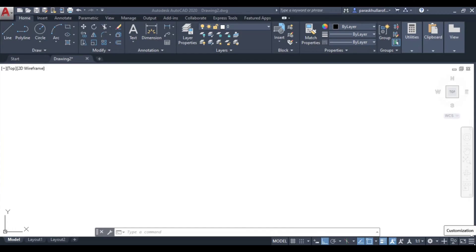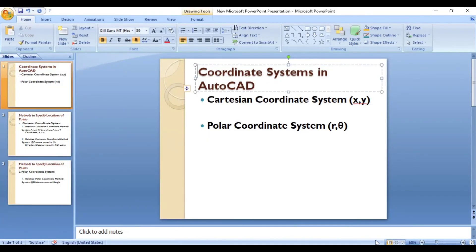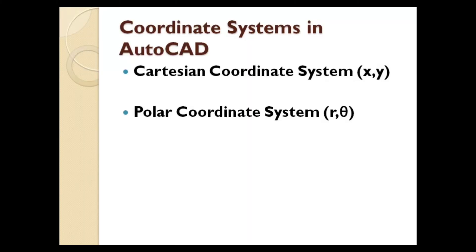Hello students. Today we will discuss the coordinate systems in AutoCAD. Basically, there are two coordinate systems: one is the Cartesian coordinate system, which has x and y as the coordinates, and the second is the polar coordinate system, which is in the form of r and theta.